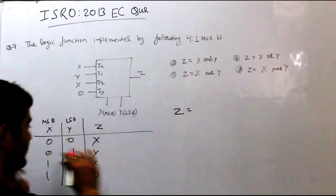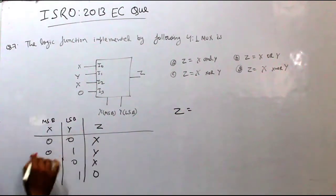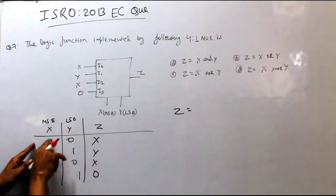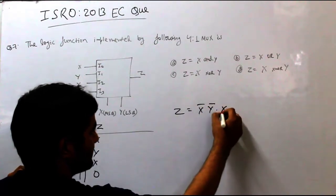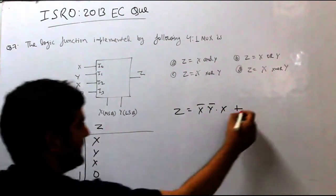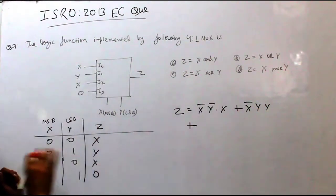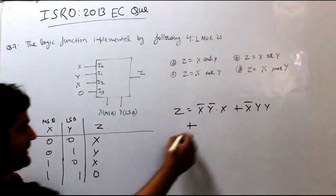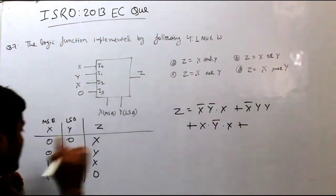So overall, if we talk about z, what is the output function? Then z will be equal to x complement y complement into x, plus x complement y into y, plus x into y complement into x, and plus lastly...